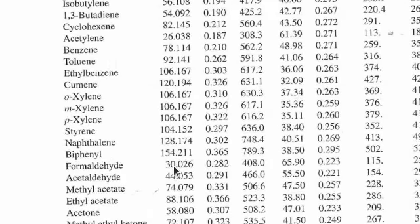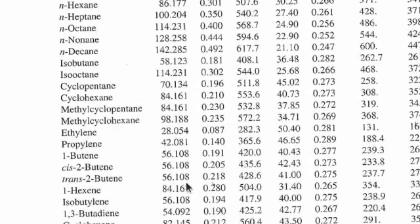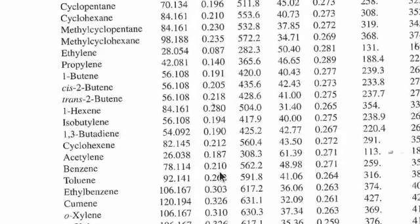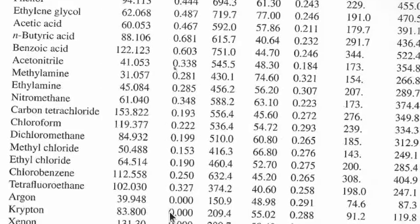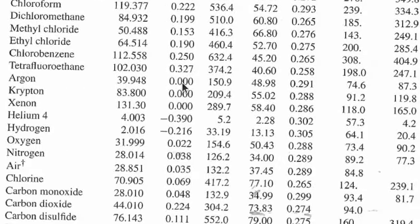The most interesting thing you will notice is the zero value of omega — for argon, krypton, and xenon. Their molecular structure has no effect, which you can understand from the fact that these are inert monatomic gases. That is why molecular structure is not having any effect on the compressibility factor behavior.